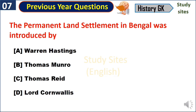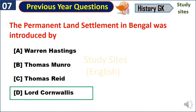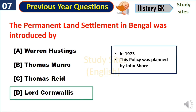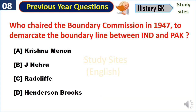The permanent land settlement in Bengal was introduced by Lord Cornwallis in 1793, but this policy was planned by John Shore. Cyril Radcliffe chaired the Boundary Commission in 1947 to demarcate the boundary line between India and Pakistan.